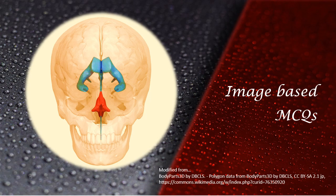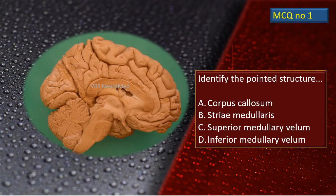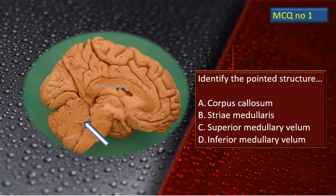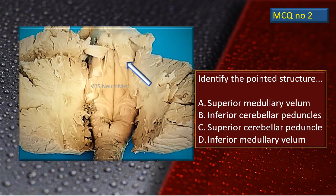Let's have a first look at some image-based MCQs. MCQ number 1: here is a sagittal section of the cerebrum and brainstem. The cerebellum is also visible. There is a flashing arrow — identify that structure. Options are listed; which is the correct answer? MCQ number 2: another flashing arrow points to a particular structure. What is this pointed structure?